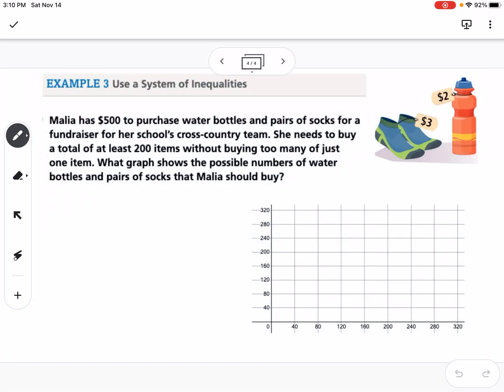Our last one here says: Malia has $500 to purchase water bottles and pairs of socks for a fundraiser for her school's cross-country team. She needs to buy a total of at least 200 items without buying too many of just one item. What graph shows the possible numbers of water bottles and pairs of socks that Malia could buy? We're going to write a system of inequalities here.